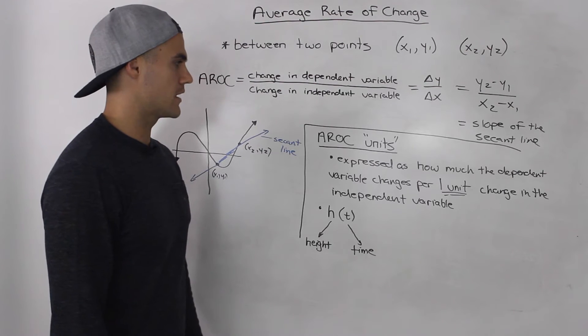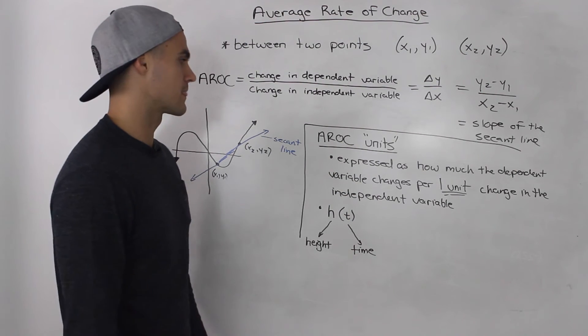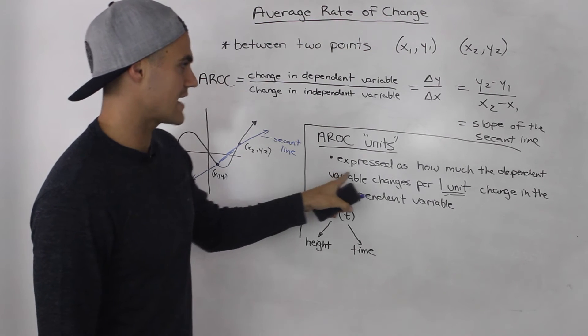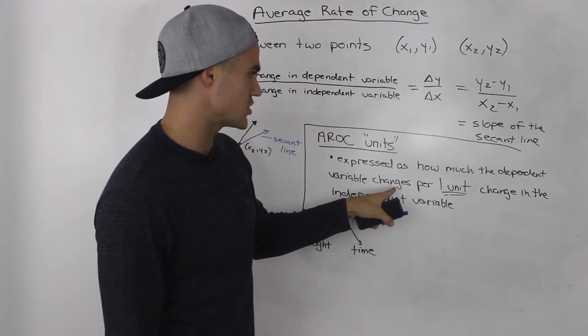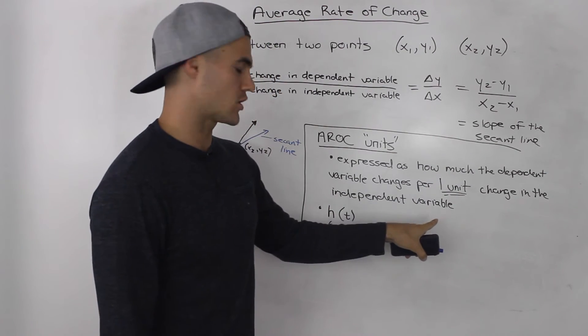Now the last point I want to make is what units the average rate of change is expressed in. It's expressed as how much the dependent variable changes per one unit change in the independent variable.